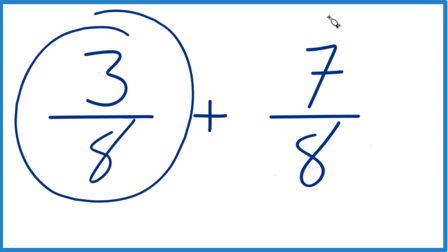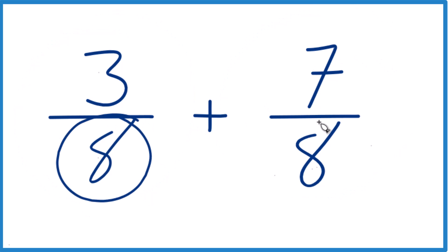If you need to add 3 eighths and 7 eighths together, here's how you do it. The key to this is that if we have the same denominator, we have this common denominator here, we just keep that the same.